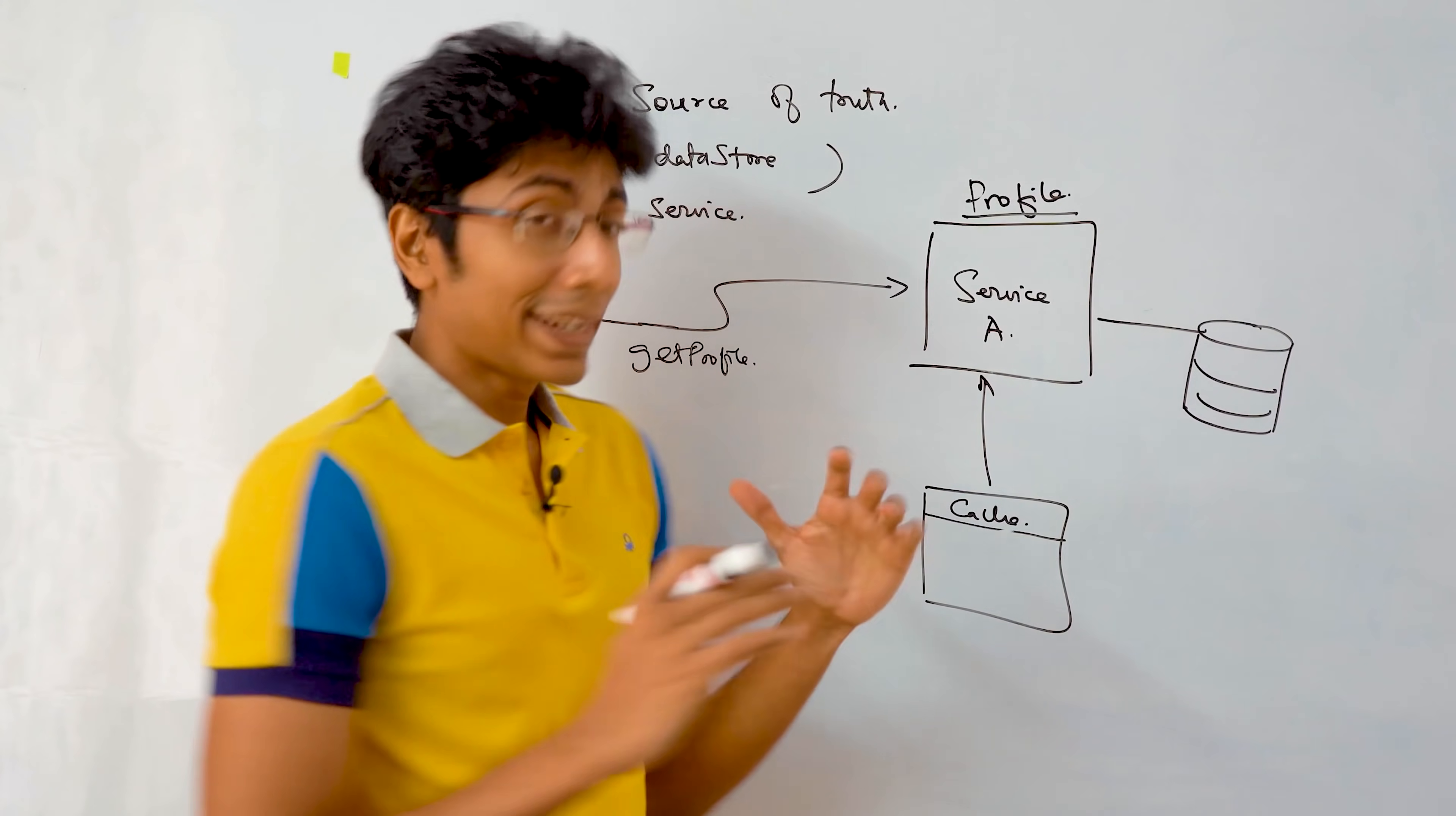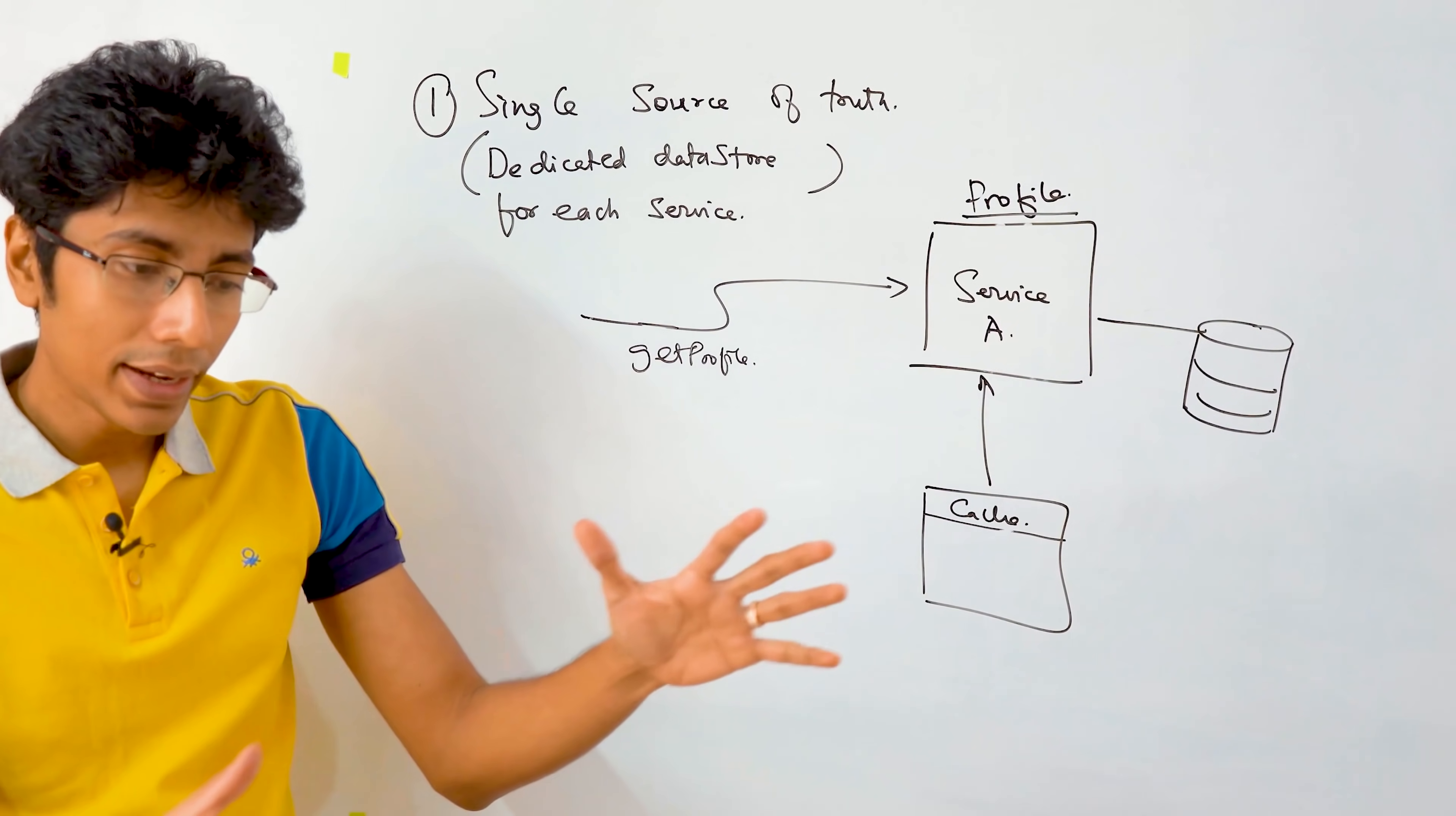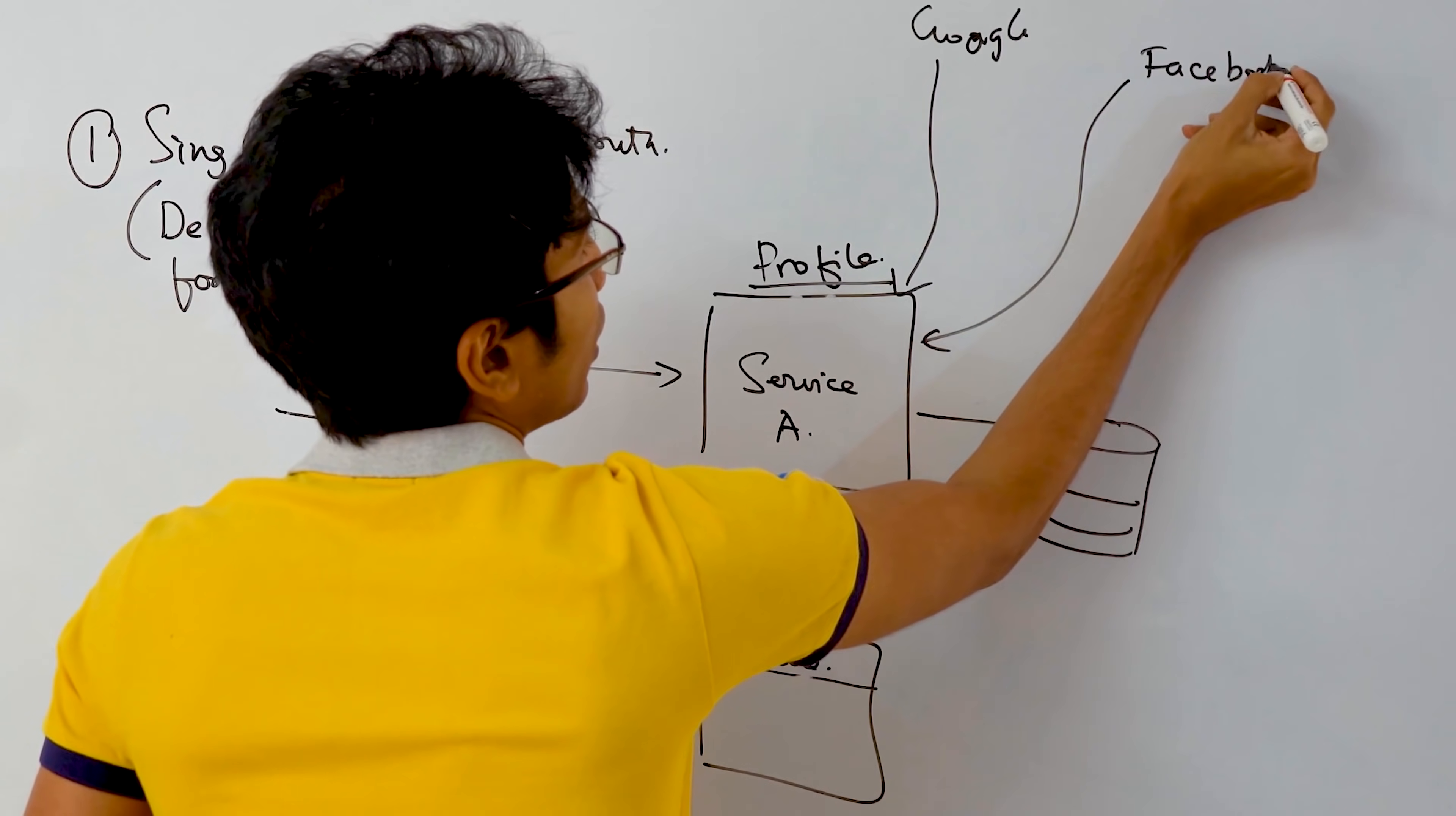The second thing to keep in mind is that it's very tempting to take services and break them down into simpler and simpler components. But the important thing to remember is that what is the responsibility of this service? And when we are breaking it down, are we also separating our responsibilities? For example, let's say the profile service needs to take information from various external services like Google, Facebook, and LinkedIn.